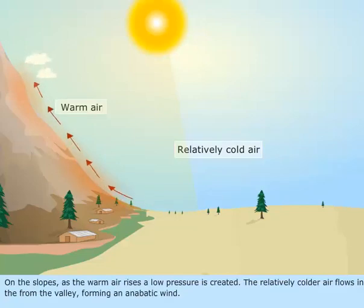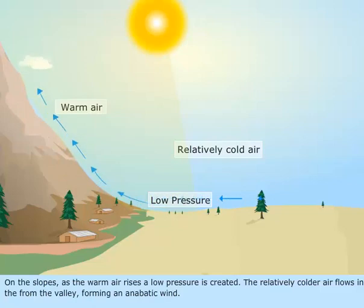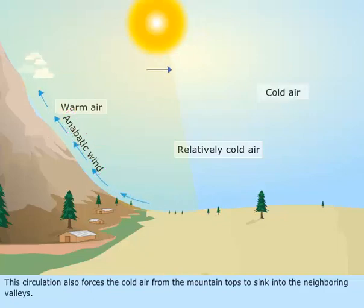On the slopes, as the warm air rises, a low pressure is created. The relatively colder air flows in from the valley, forming an anabatic wind. This circulation also forces the cold air from the mountaintops to sink into the neighboring valleys.